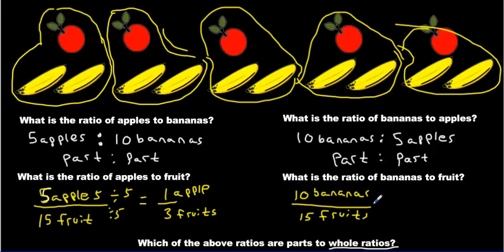Now looking at the bananas, you could do the same thing. You can reduce that one by dividing as well by 5. Divide that by 5. And you're going to get 2 bananas for every 3 fruits.